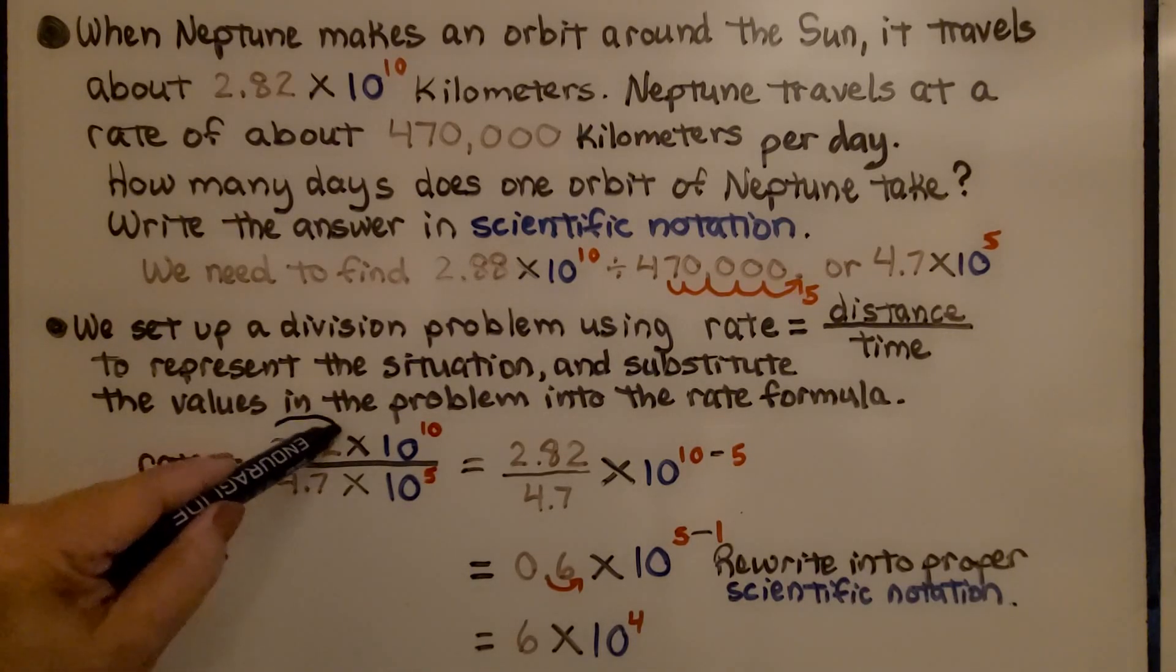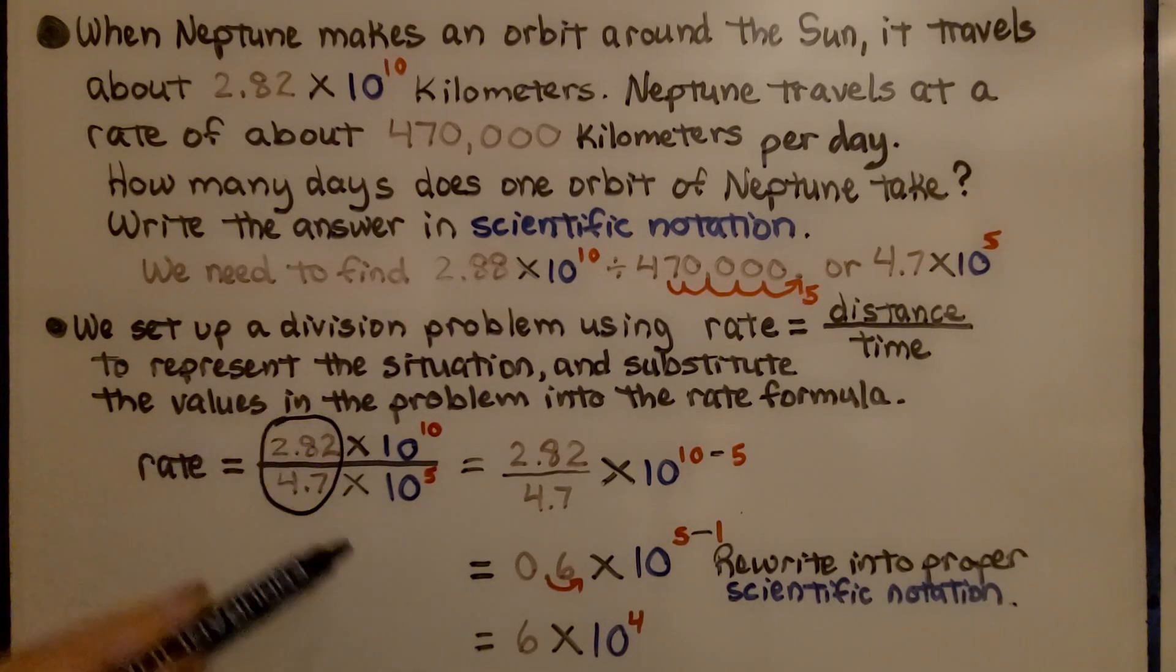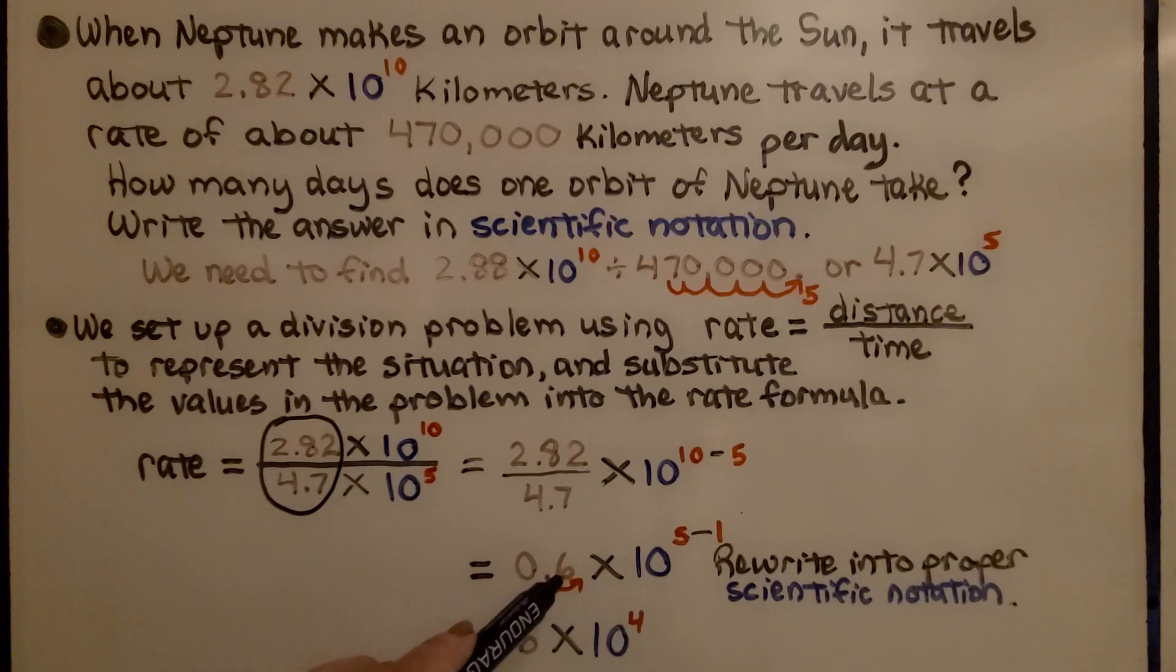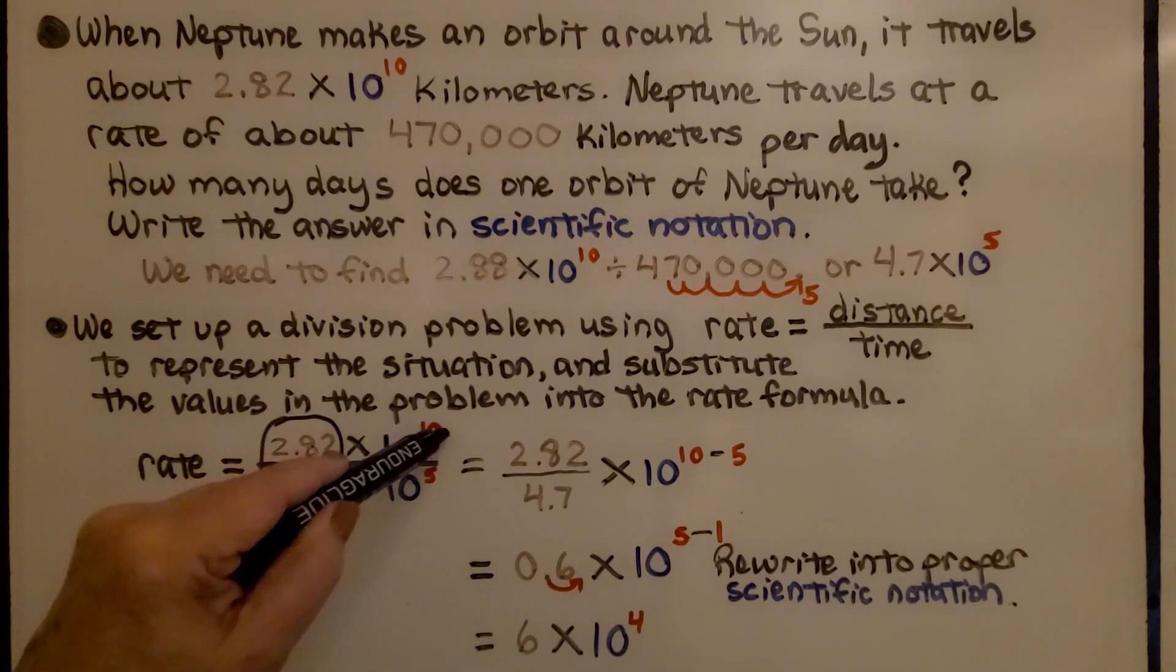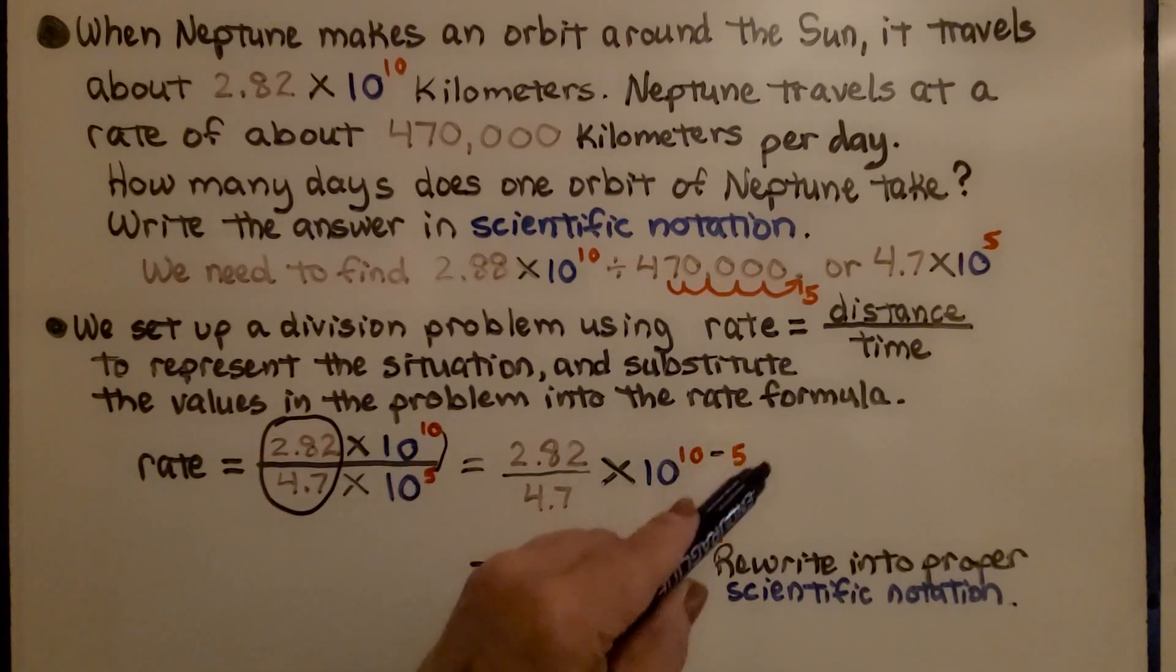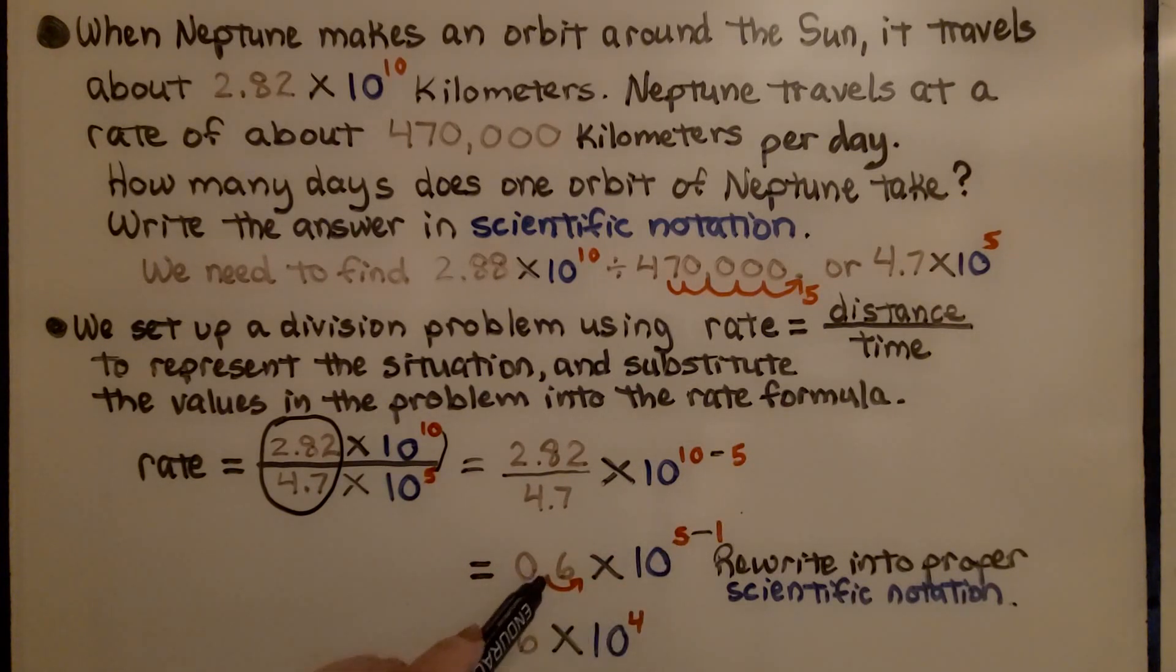We do our division here, and we're going to get 0.6. And we do our subtraction here and get 10 minus 5, which is 5, but we can't have 0.6 in proper scientific notation. So we need to move this decimal point back to here. That means we're going to have to take away 1 from this exponent. We get 6 times 10 raised to the 4th power.